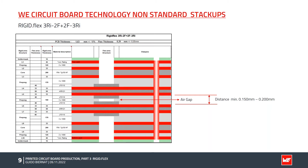Now I'd like to show a so-called non-standard stack-up. This 2RI 2F plus 2RI 3RI is not a standard stack-up, even if the construction is symmetrical. Here we have three rigid layers, two flex layers, two flex layers, and three rigid layers.